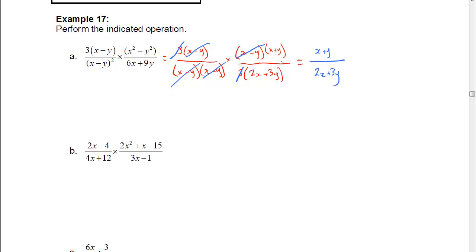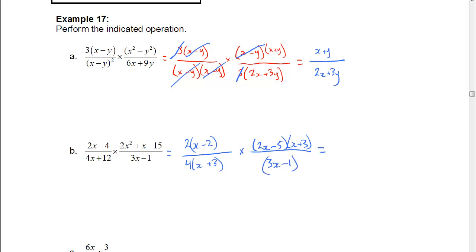In the next example, we're going to factor the numerator — that's 2 outside of (x minus 2). The denominator gives us 4 outside of (x plus 3). In the next fraction, the factored form of that numerator is going to be (2x minus 5)(x plus 3), and the denominator is (3x minus 1). We can cancel (x plus 3) and (x plus 3), and 2 and 4 cancel leaving a 2. We end up with (x minus 2)(2x minus 5) over 2(3x minus 1).